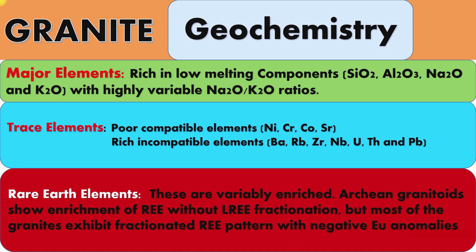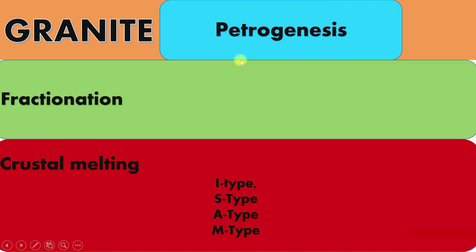The next aspect is petrogenesis — how granites are formed. There are two most important processes by which granites evolve. The first is fractional crystallization. Only volumetrically small granite bodies could be formed by fractionation of basaltic or andesitic magma, where minerals crystallize according to their temperature.